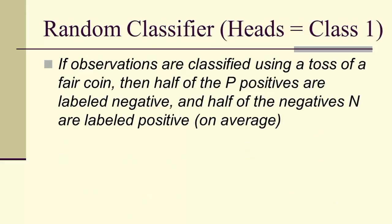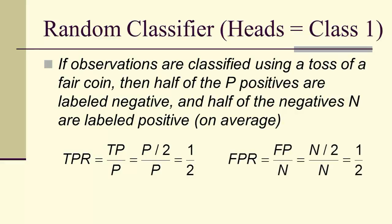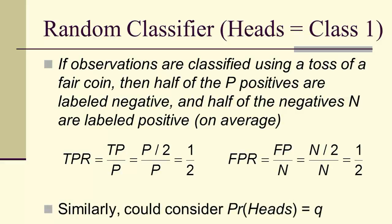Now let's look at our random classifier. If we use a coin toss, on average half of the positives would be labeled negative and half of the negatives would be labeled positive, giving us a true positive rate of one half and a false positive rate of one half. In general, we could use a biased coin with a probability Q of getting heads.